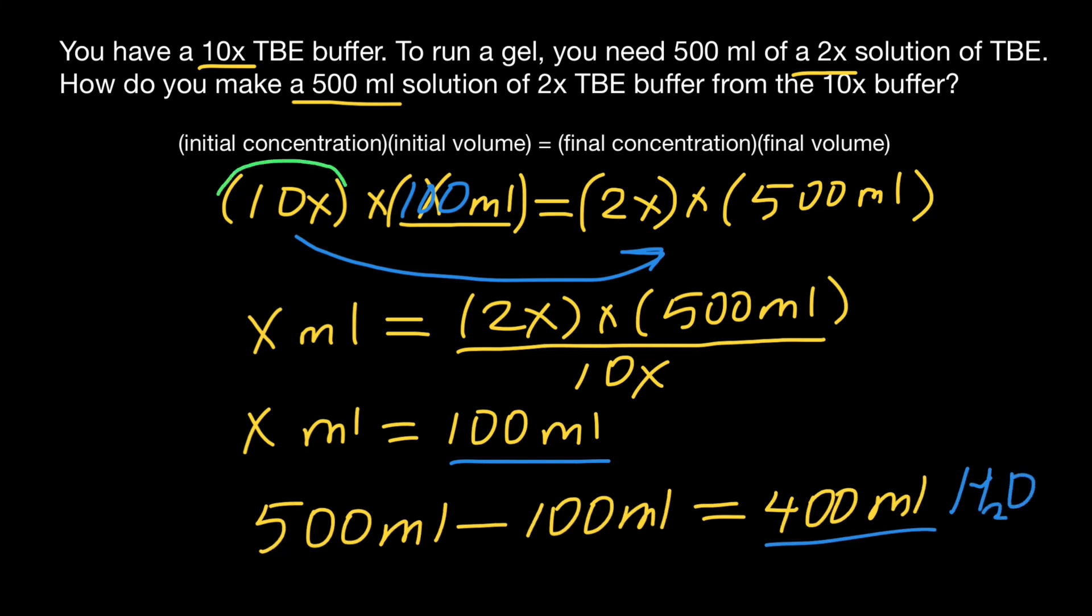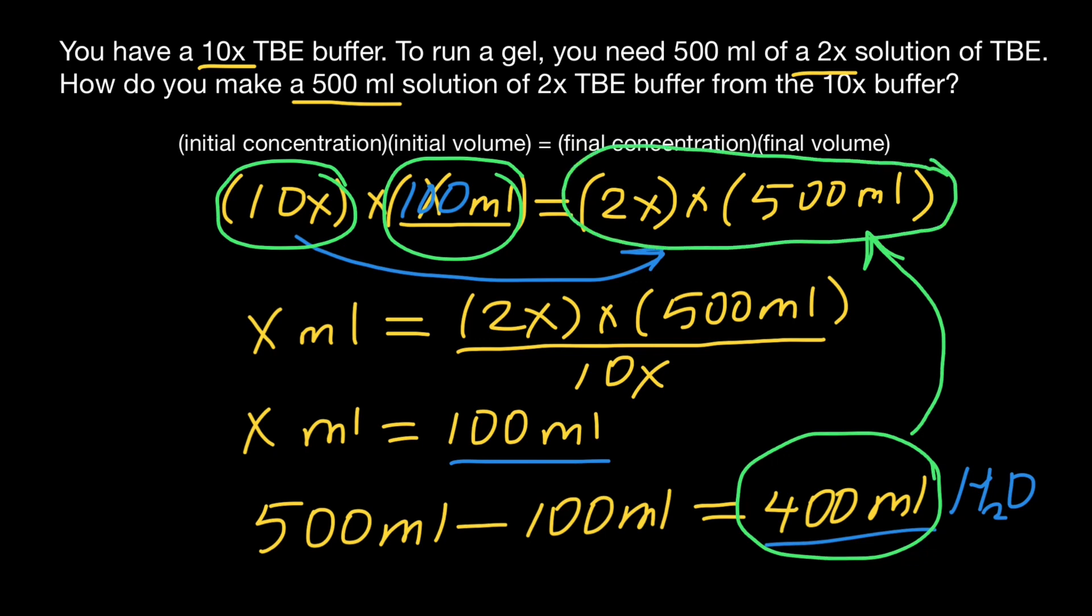So we take 10X concentration of the initial solution, which is going to be 100 milliliters, and we add 400 milliliters of water in order to get 500 milliliters of 2X concentration of the final solution.